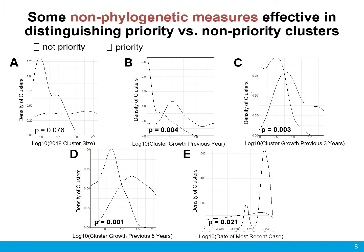These plots show how well a particular measure is able to separate clusters defined as priority by the current public health protocol versus those defined as not priority, specifically for the year 2018. Here you see the commonly used non-phylogenetic measures. Four out of five show a significant difference between priority and non-priority clusters, although only three out of five begin to create two well-defined peaks between the two groups of clusters. It is also worth noting that although these measures are effective, many of them rely on data collected in previous years, which may not always be available during study of a new outbreak outside of BC that hasn't previously been followed. One of the advantages of using diversification rate-based measures is that they can be calculated using only the data available at the time.